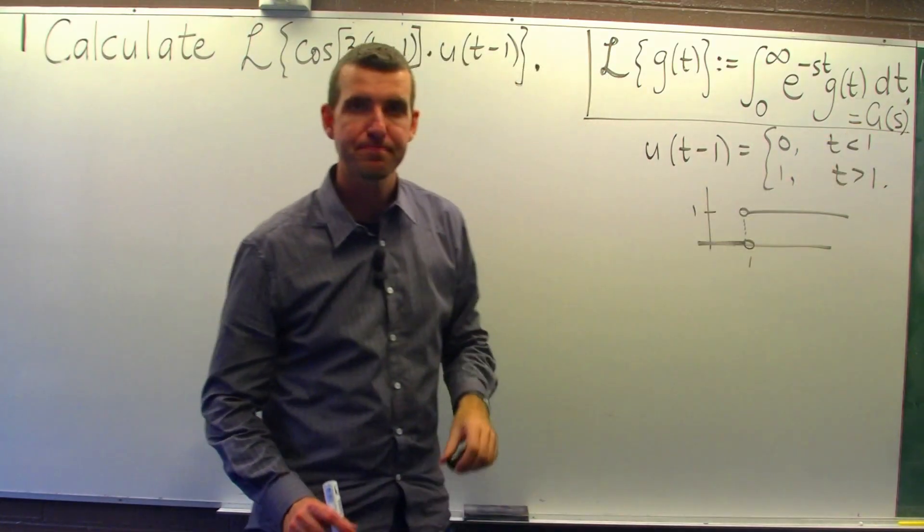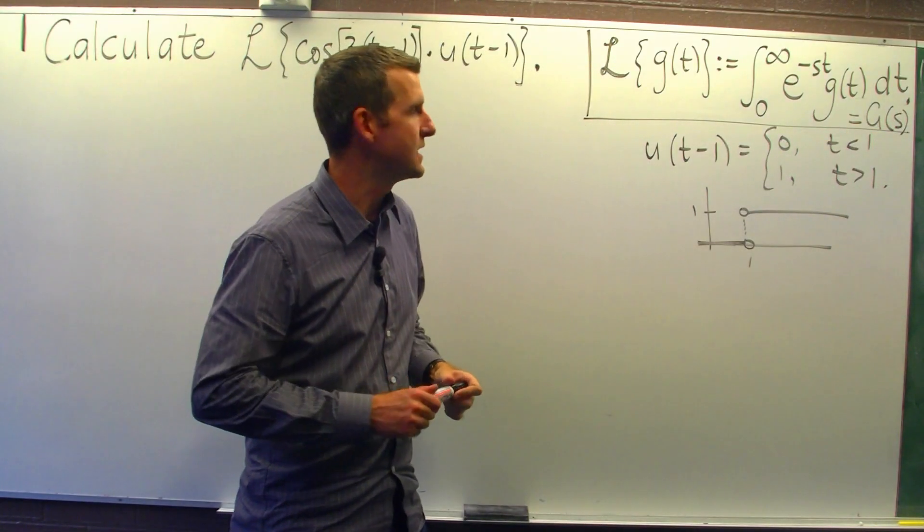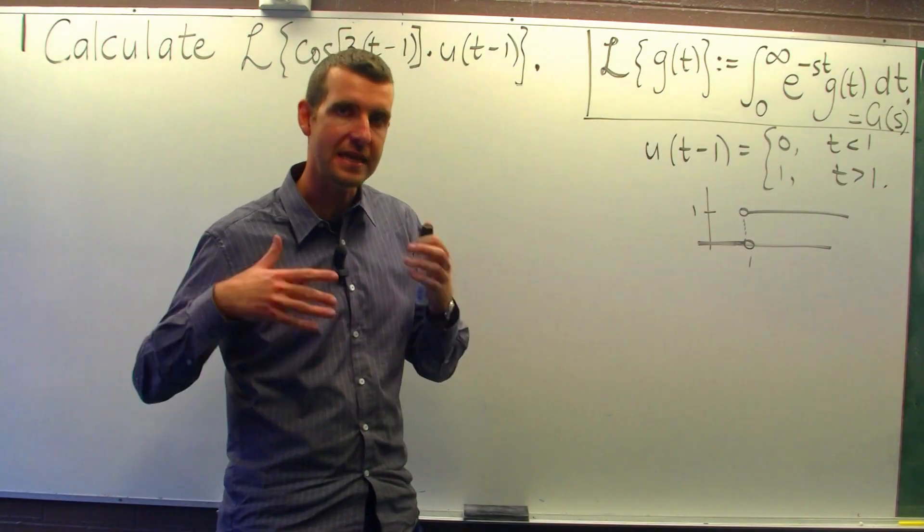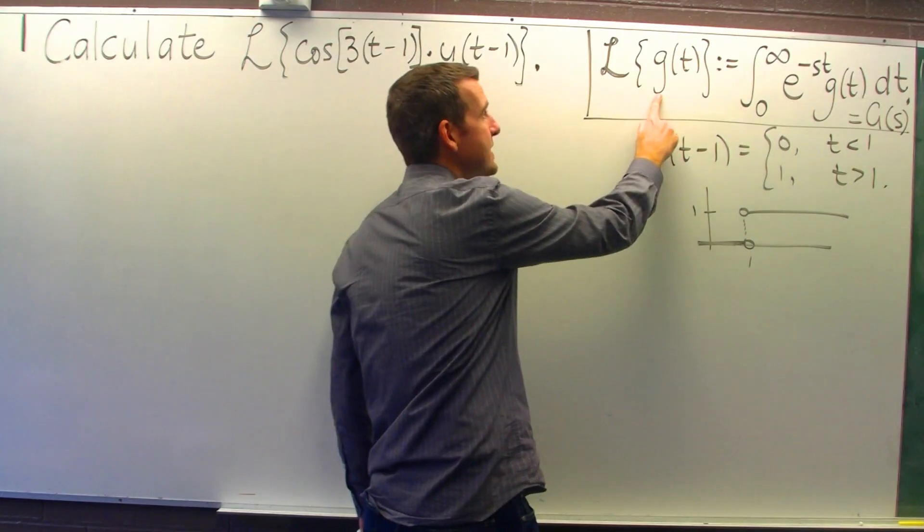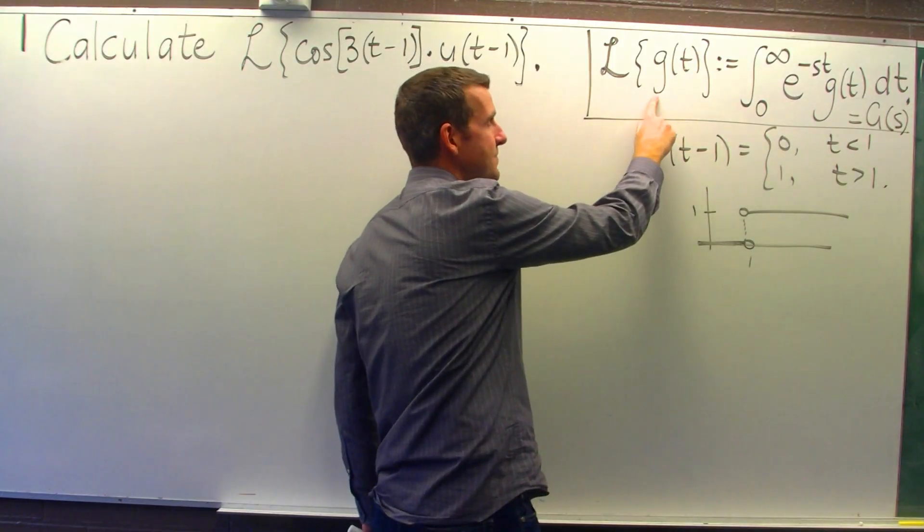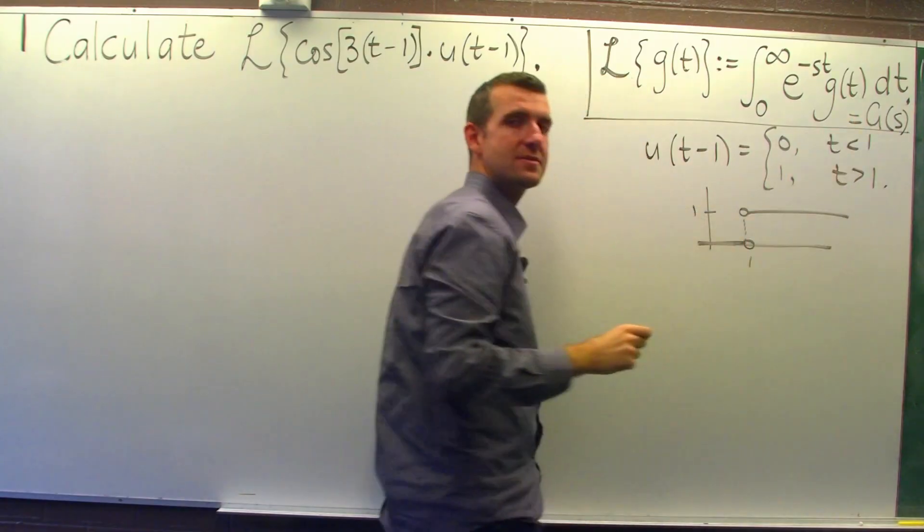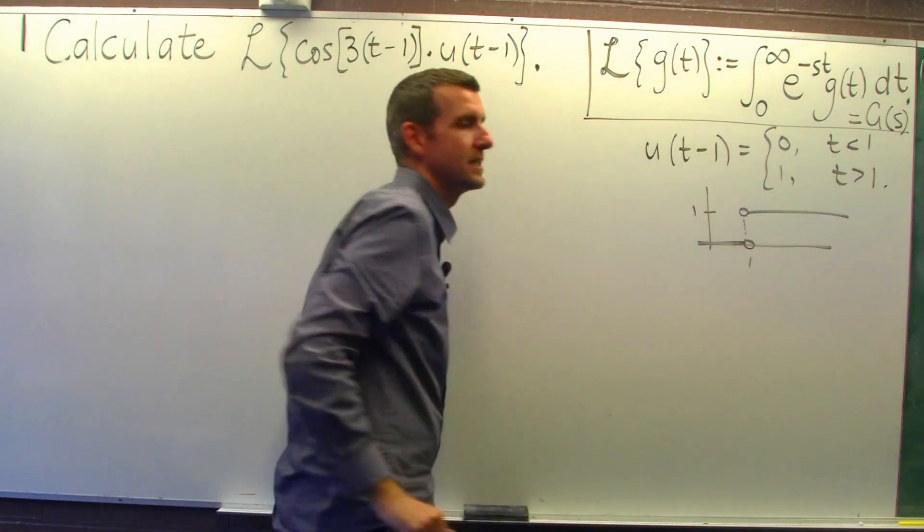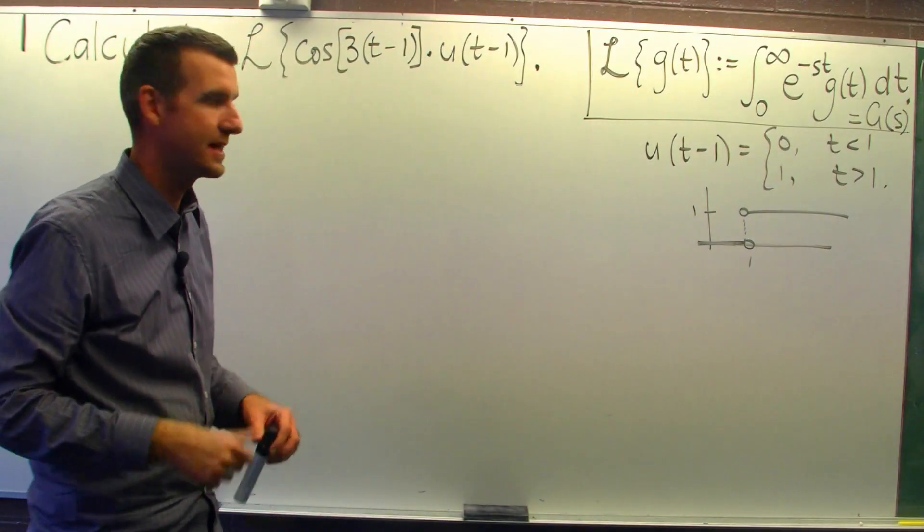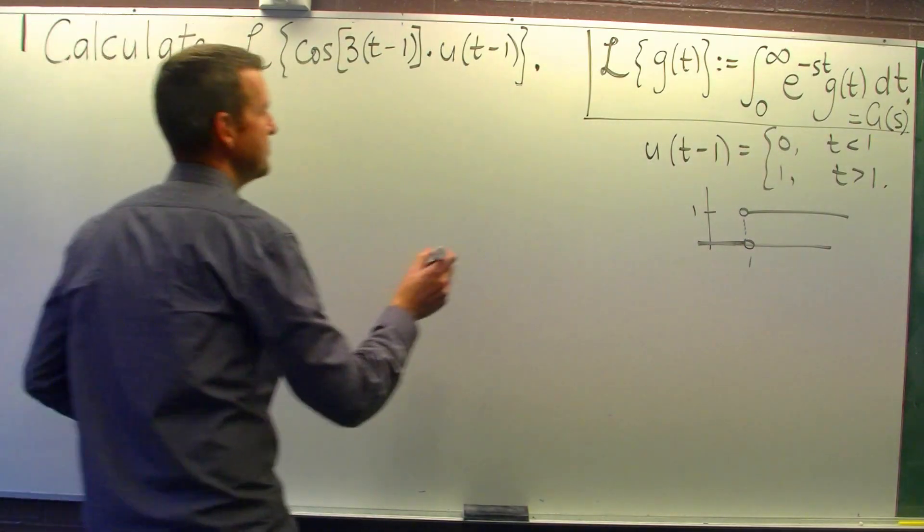Now when we denote things in the context of Laplace transforms, lowercase letters usually mean functions of t, and uppercase letters, capital letters, mean the Laplace transform of that lowercase letter. Alright, so how do we solve this problem?